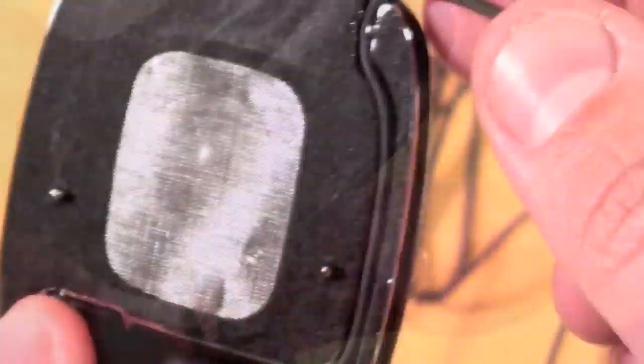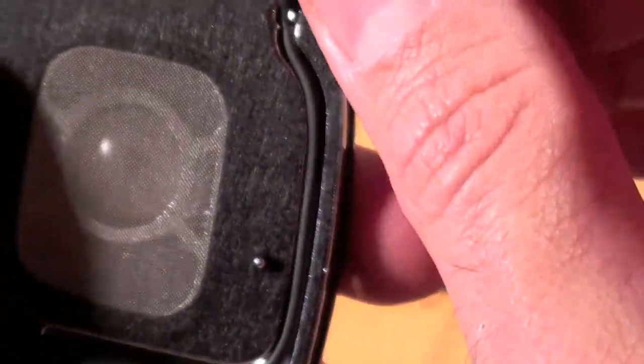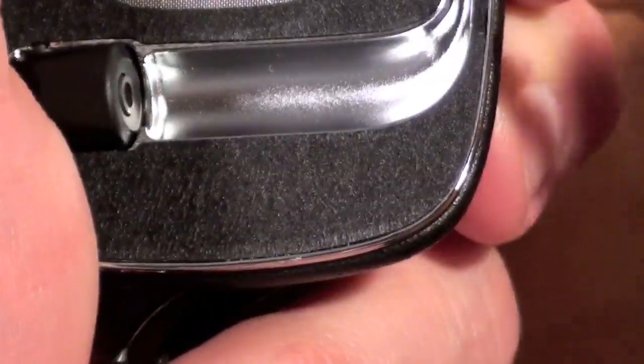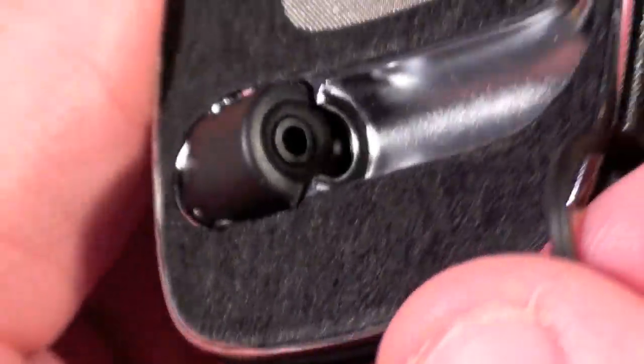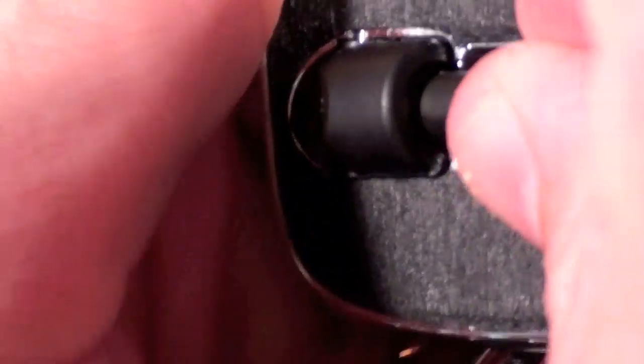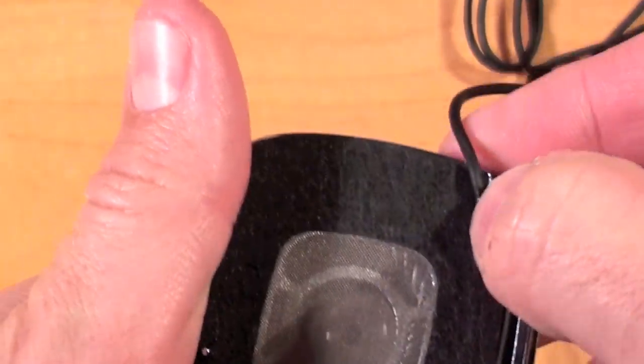Here we can see the mylar mesh covering the 40mm speaker along with the wire which is fished through a channel in the ear piece and is connected to a pivoting jack. This design allows the wire to be easily replaced if damaged and is less likely to cause permanent damage to the headset if accidentally pulled.